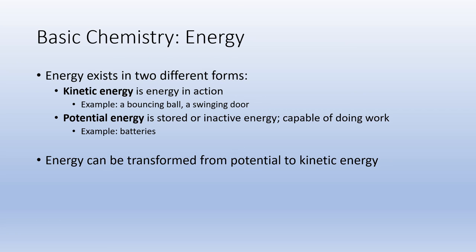We will see energy in two different forms: the first being kinetic and the second being potential. Kinetic energy is energy in action — we see evidence of this in the constant movement of small particles of matter, also known as atoms, but also in larger objects such as a bouncing ball, a swinging door, or the heart beating and forcing blood throughout the body. Potential energy is stored or inactive energy that is capable of doing work. Batteries are a great example — you buy them at the store and put them in a remote control, and they work. That is potential energy transforming to kinetic energy.